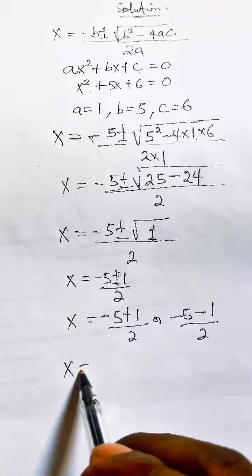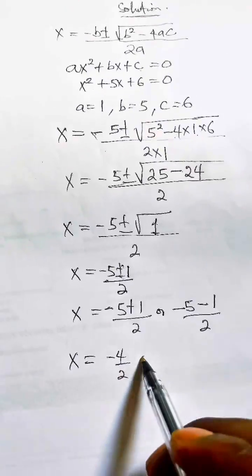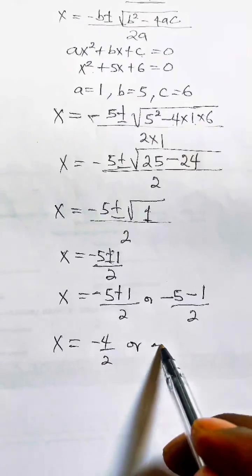Finally, x will be equal to minus 5 plus 1 equals minus 4, divided by 2, or minus 5 minus 1 will be equal to minus 6.